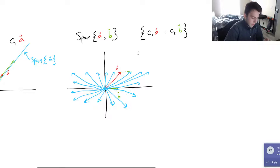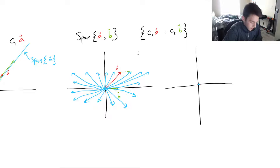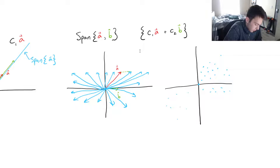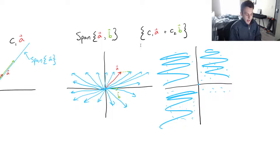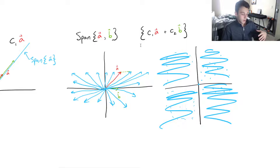Think about the tip of each vector as a blue dot. If a and b are both scaled by zero, we'd be at the origin, but we can reach any point in R2. We'd have blue dots basically everywhere, meaning this entire plane would be blue. So we can think of a and b as spanning all points in R2.